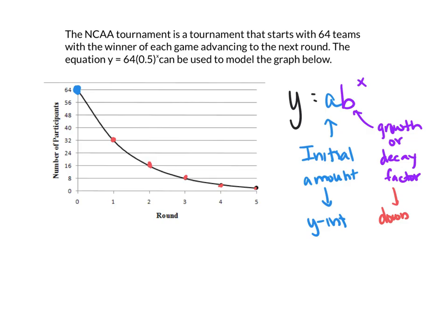Now notice here that these are the number of participants, the number of teams left at any particular point. And notice that we can't be below this value right here, the 0 value, and that's because this is what we call an asymptote.